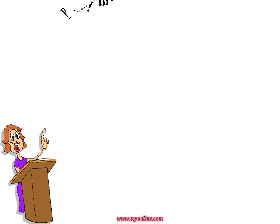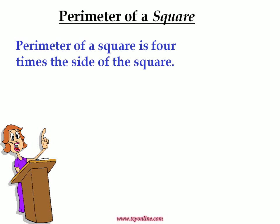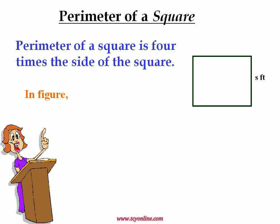Let us consider the perimeter of a square. As perimeter is equal to sum of all the sides, and a square has four equal sides, we can say that perimeter of a square is equal to four times the measure of a side of the square. That means, in a square whose side is equal to S feet, perimeter will be equal to S plus S plus S plus S.